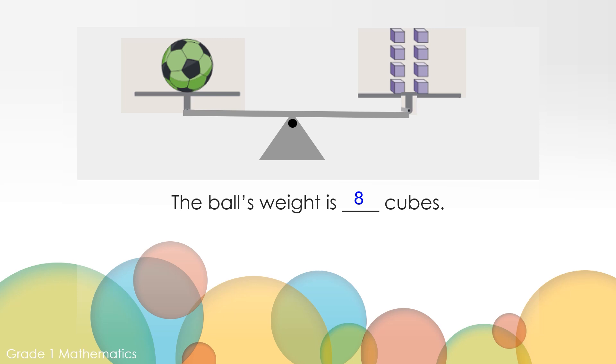The ball's weight is eight cubes. How did you see it? Perhaps you saw four cubes and four cubes and knew four plus four makes eight. Or perhaps you counted by ones and saw one, two, three, four, five, six, seven, eight cubes. Or maybe you counted by twos and saw two, four, six, eight cubes.